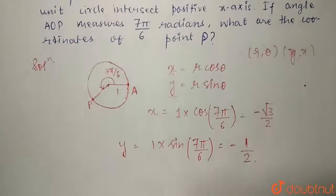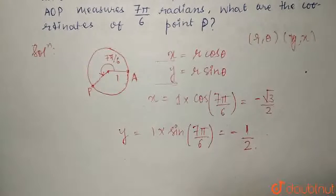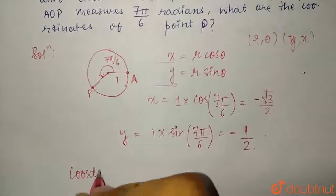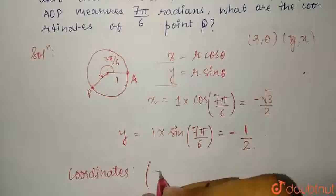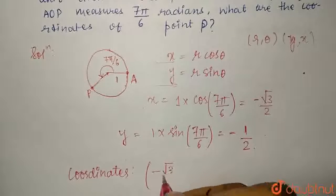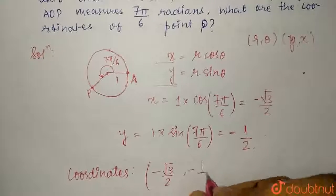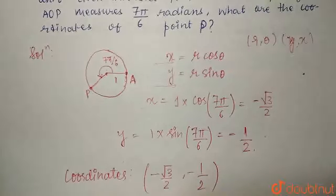The point or we have to find the coordinates of the point. So, coordinates would be minus root 3 by 2, minus 1 by 2. Thank you.